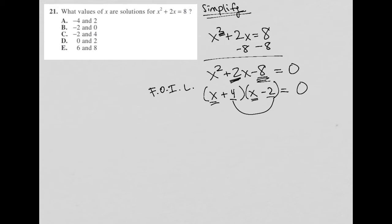So now that I have these two binomials, I can say x plus 4 equals 0 and x minus 2 equals 0. So therefore, x equals negative 4 and x equals positive 2. And therefore, my answer is choice A.